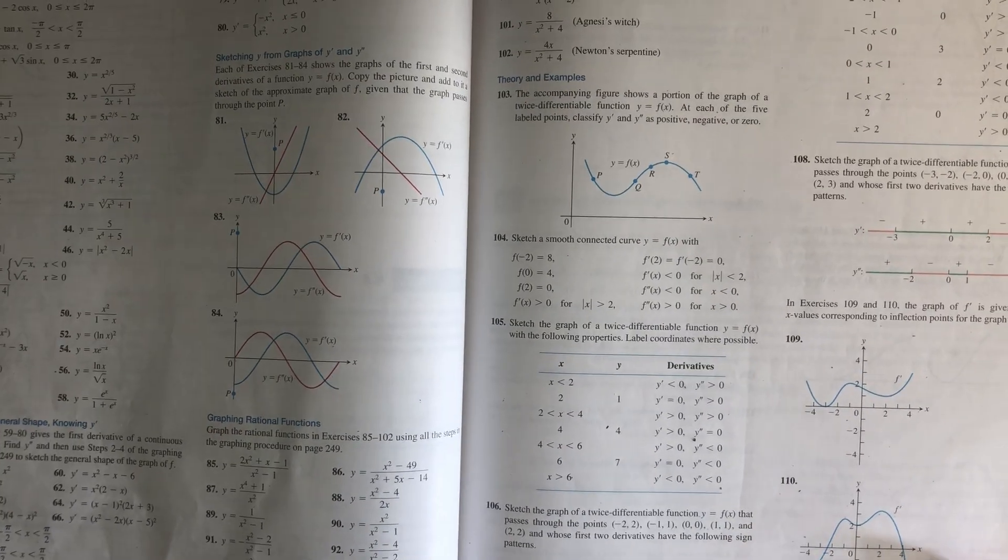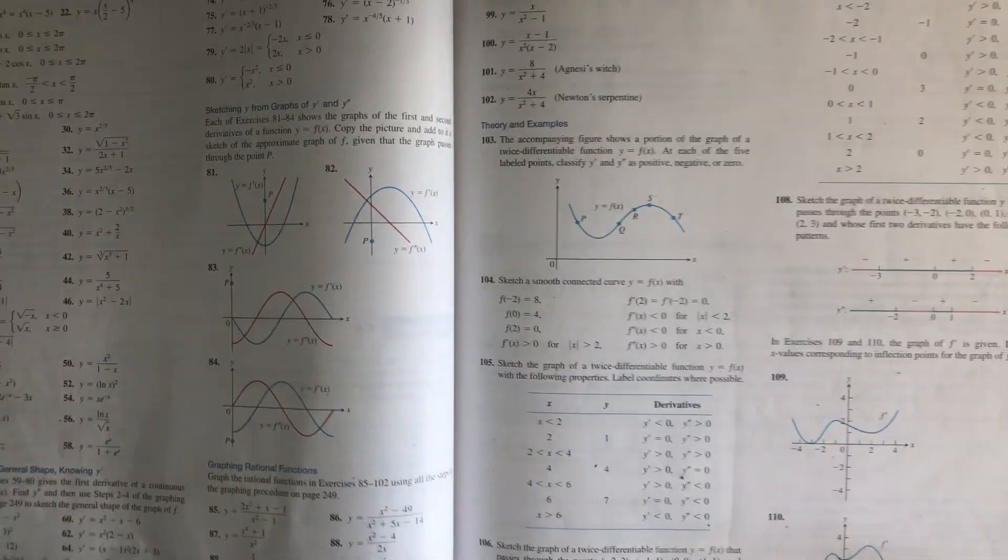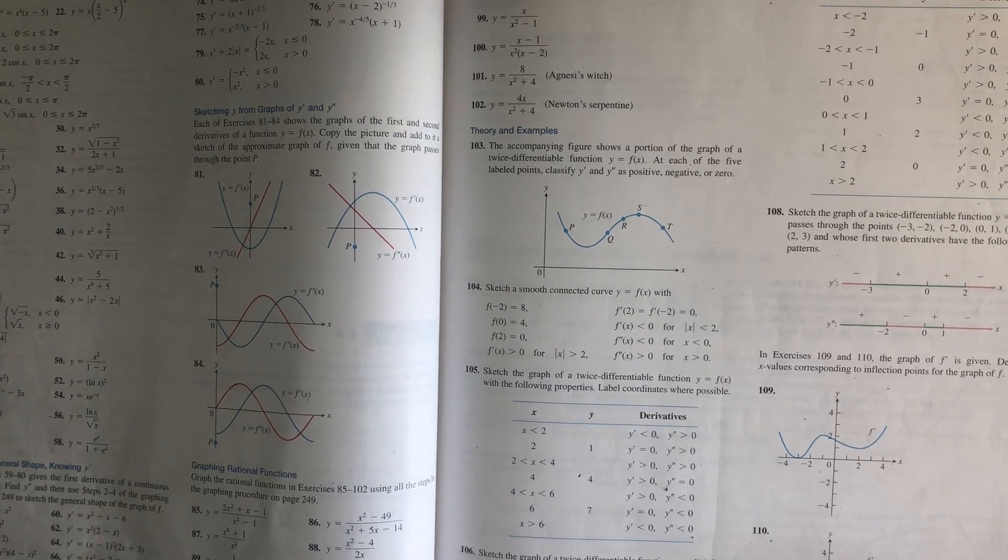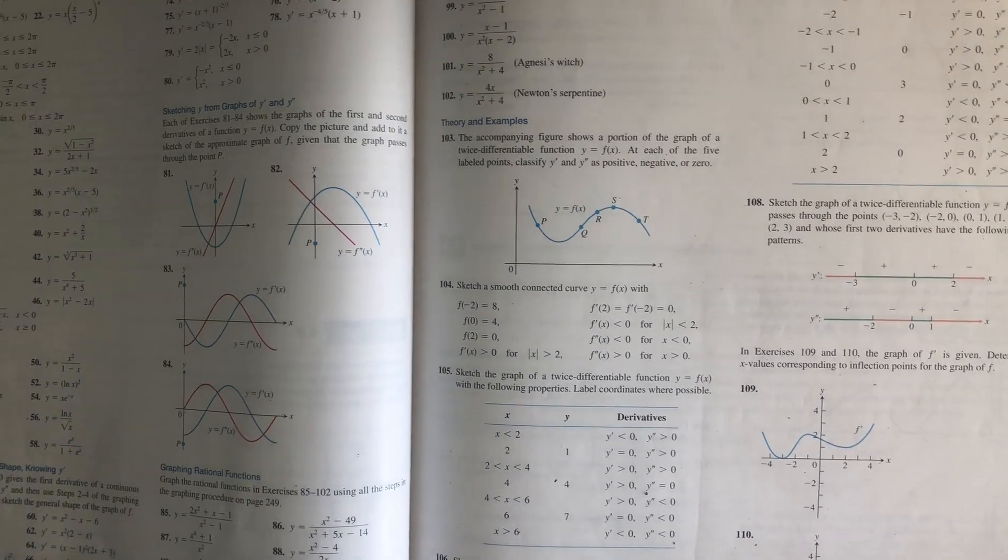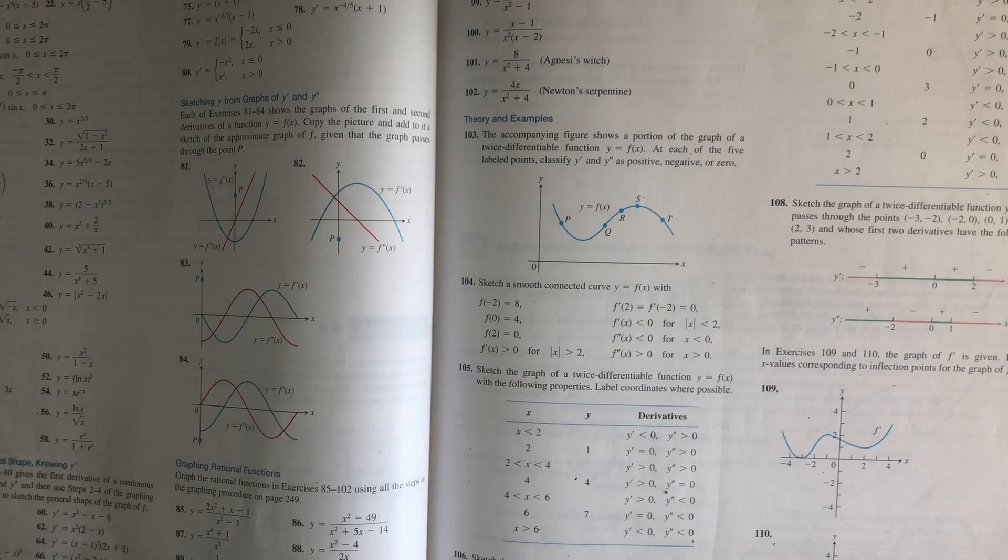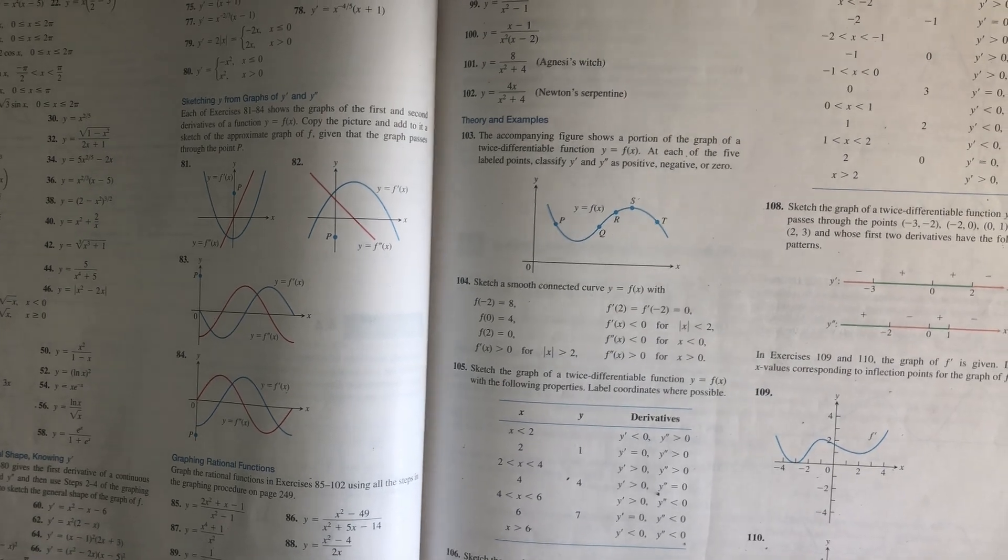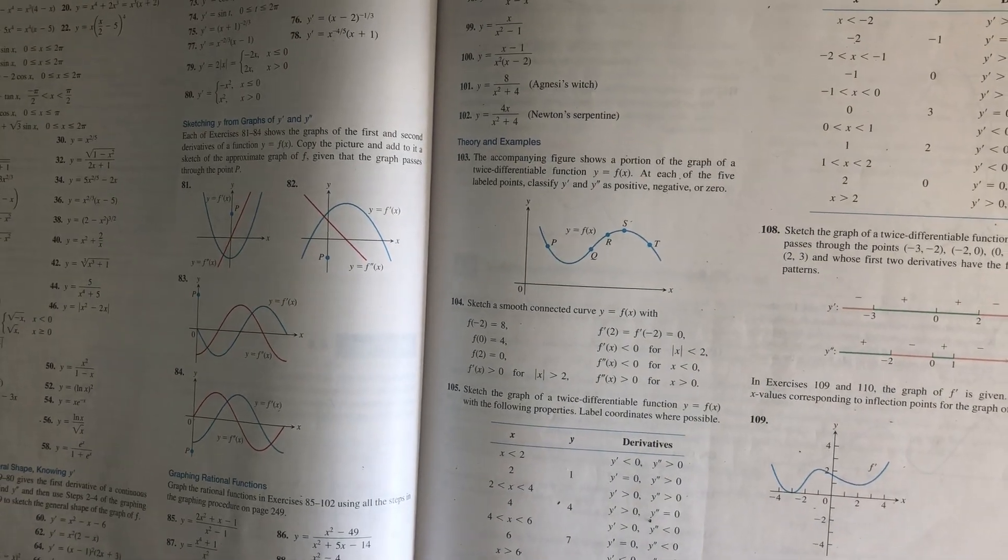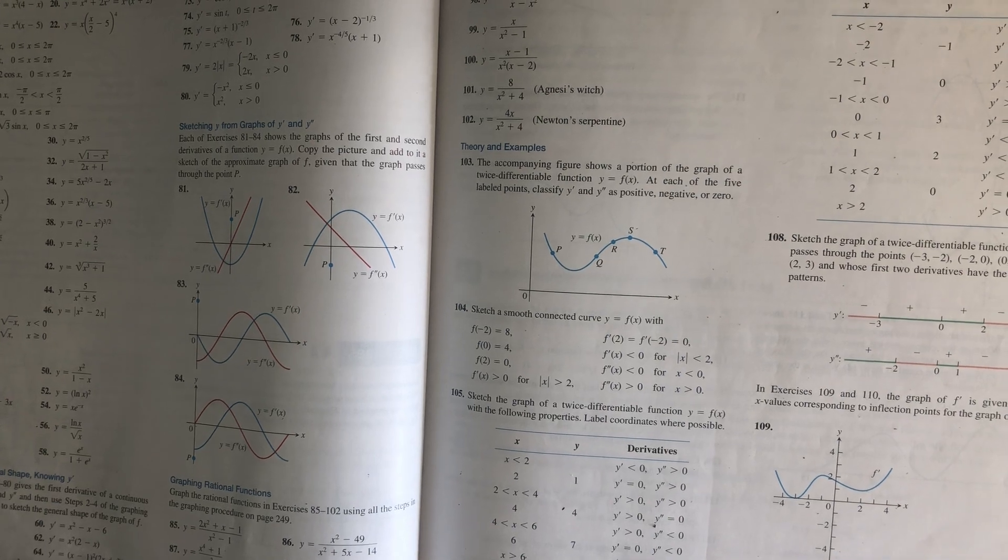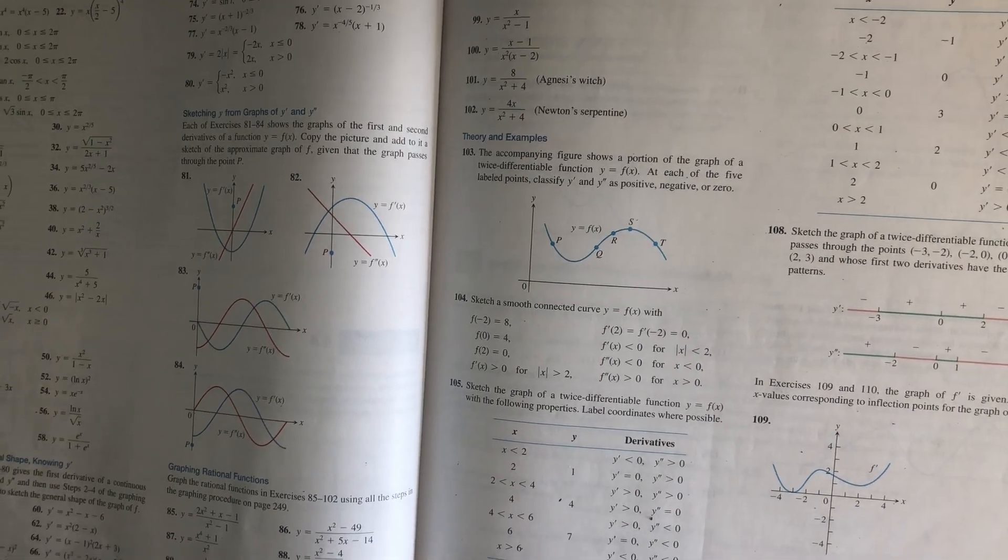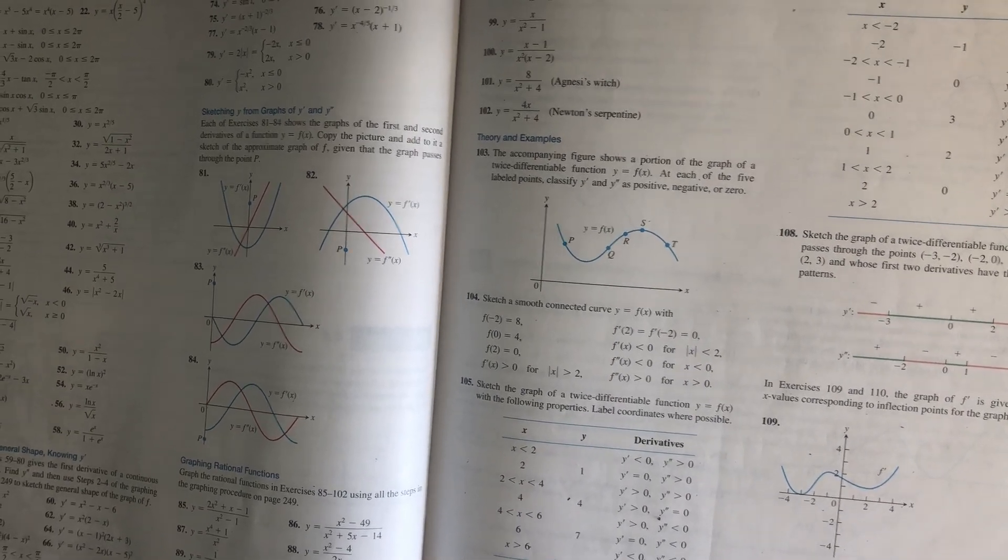On page 252 of the textbook, you'll find problem number 82. Each of the exercises 81 through 84 shows the graphs of the first and second derivatives of a function y equals f of x. Copy the picture and add to it a sketch of the approximate graph of f, given that the graph passes through the point p.